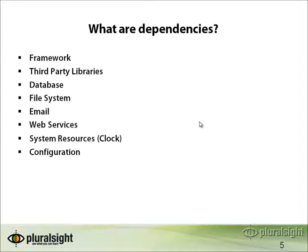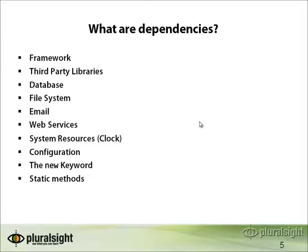Configuration can be a dependency in terms of files used for configuring your application. The new keyword is itself a possible indication that you've got a dependency — you want to limit the places in which your application instantiates new objects, unless they're primitives like strings. Related to that is the use of static methods: anytime you call a static method you're adding a dependency that cannot easily be separated from the calling code, making it very difficult to change behavior throughout the entire application in one configuration change.